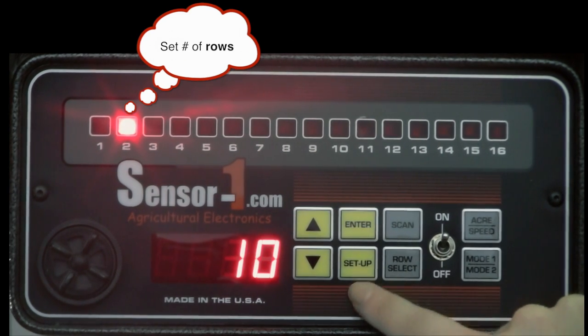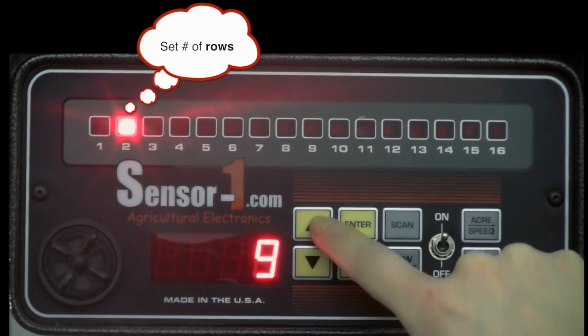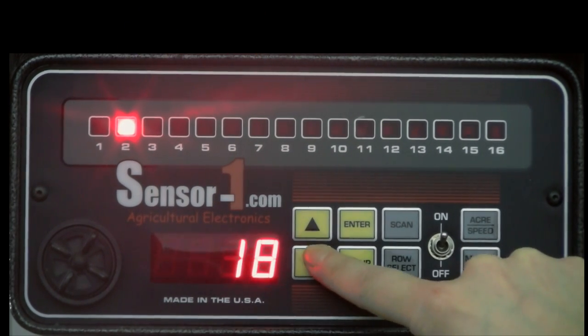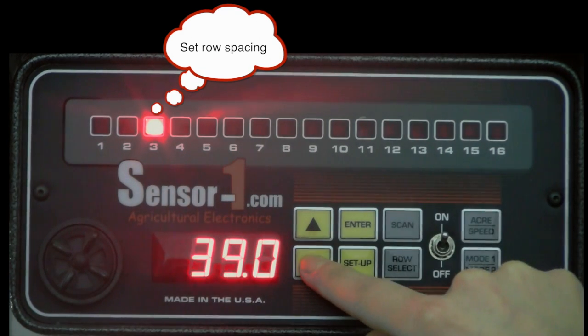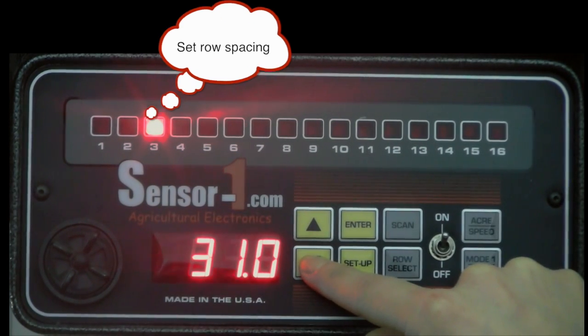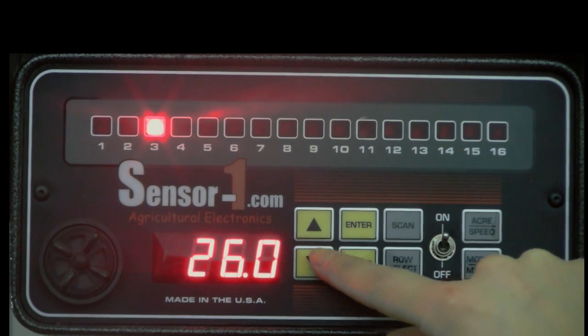The light number 2 will come on. Use the arrow keys to determine the number of rows you want to monitor. Then press enter. The light will appear over row number 3 now. Use the arrow keys again to determine row spacing. Row spacing is determined by inches. Press enter.